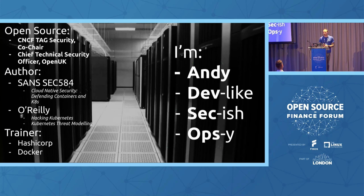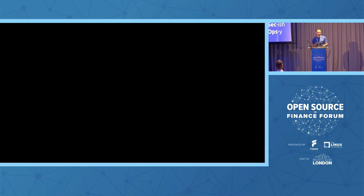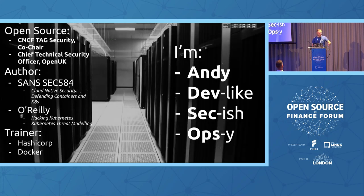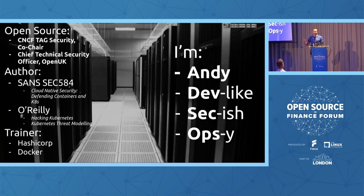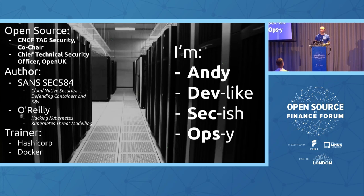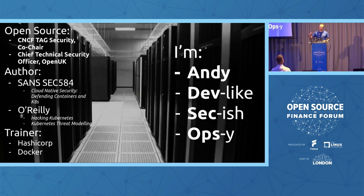I also work for a charity called Open UK, along with one of my colleagues here, Dawn Foster, advocating to the UK government for the use of open source and the financial incentives to actually pay maintainers. We've seen projects come out of the US such as the OpenSSF's Alpha Omega project, funneling tens of millions of dollars into open-source maintenance — we would like to see that here.